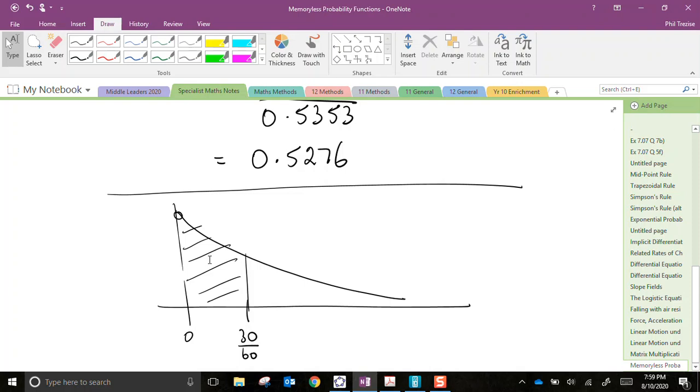That's why this exponential function has this property where it's called memoryless. It doesn't remember what happened earlier. If you wait 30 seconds from any given time, if you go to any random time, say 2.5 minutes, and you say, I want to go a half a minute ahead...